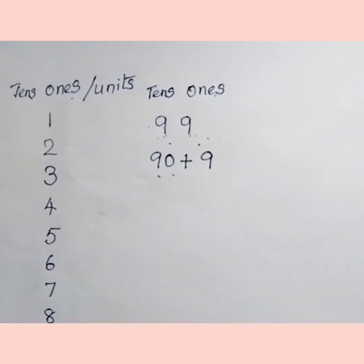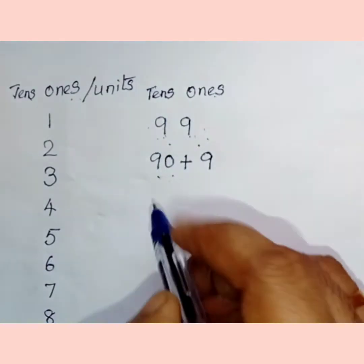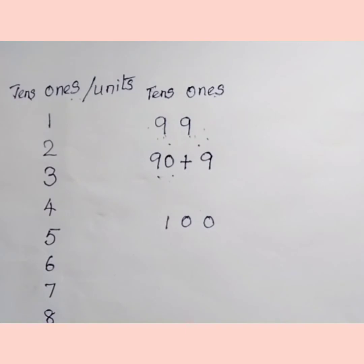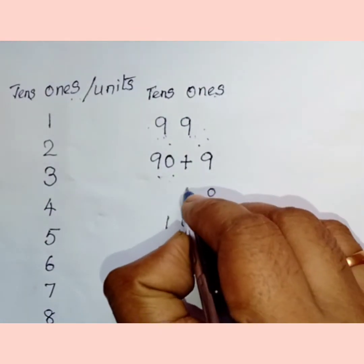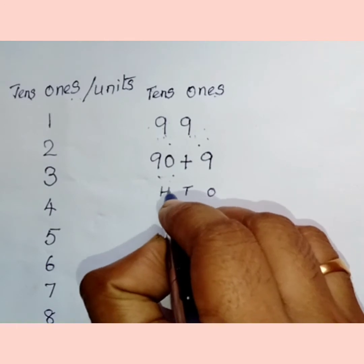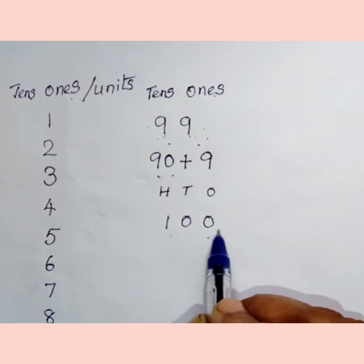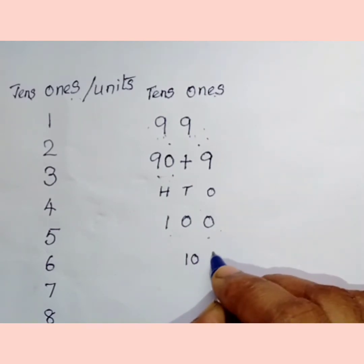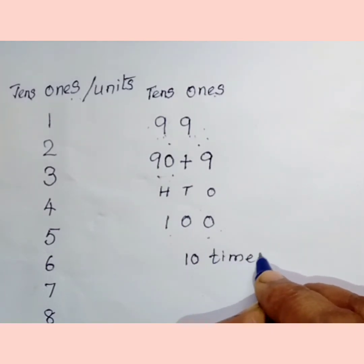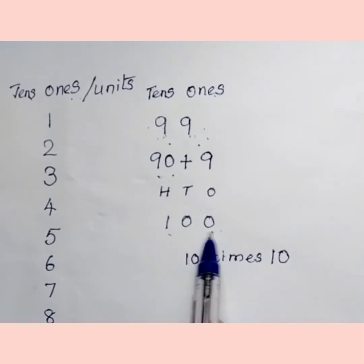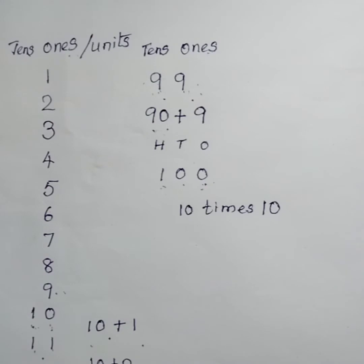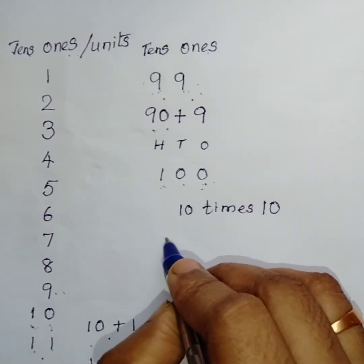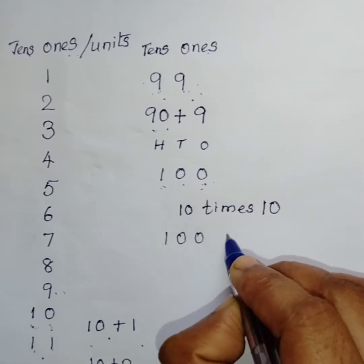Now, after 99, that is 99 plus 1, it is 100. Now, look at this, it is a 3 digit number. This 0 stands in the ones place, next 0 stands in the tens place and 1 stands in the hundreds place.